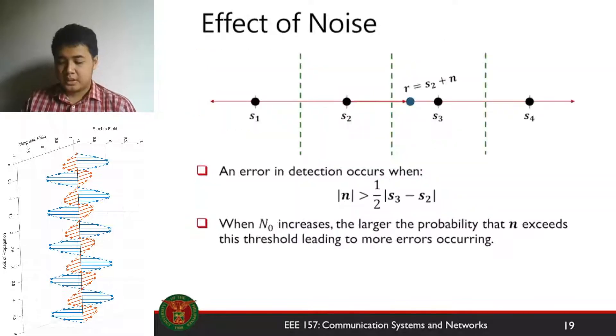So the effect of noise as I've shown you in the previous part of this lecture. The noise displaces the symbol transmitted. Let's say S2 is transmitted again. Noise displaces it to somewhere near S3 and you have an error in detection. This received signal can be modeled as a sum of the noise corrupting the signal. This is a random variable and your transmitted signal S sub 2.